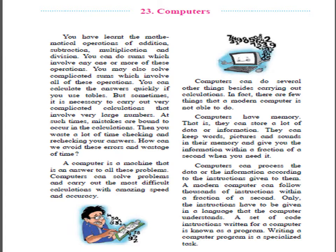How can we avoid these errors and wastage of time? A computer is a machine that is the answer to all these problems. Computers can solve problems and carry out the most difficult calculations with amazing speed and accuracy. Computers can do several other things besides calculations. In fact, there are very few things that a modern computer is not able to do.